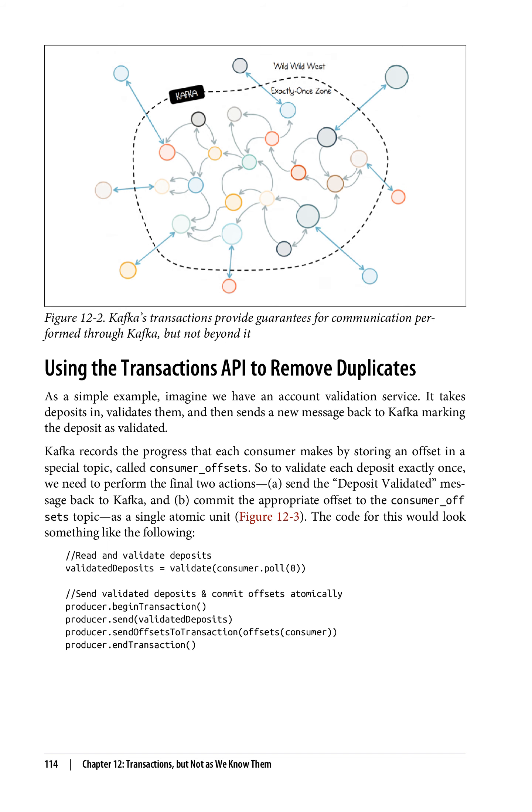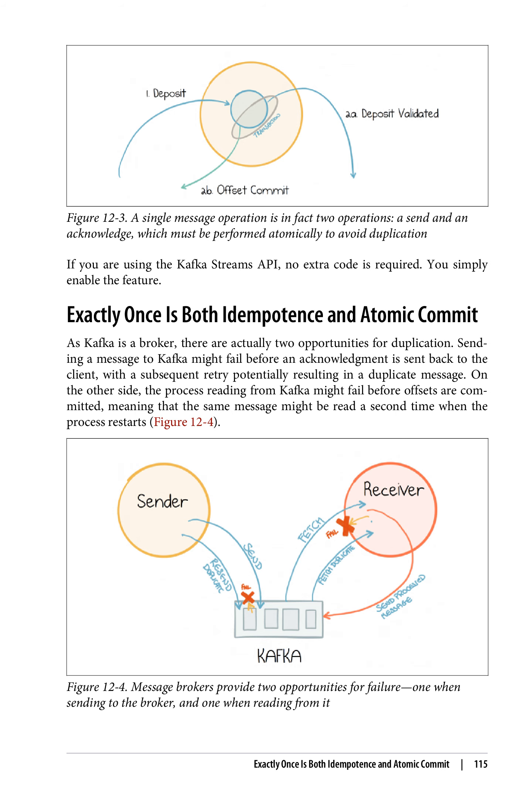Using the transactions API to remove duplicates: as a simple example, imagine we have an account validation service. It takes deposits in, validates them, and then sends a new message back to Kafka marking the deposit as validated. Kafka records the progress that each consumer makes by storing an offset in a special topic called consumer_offsets. So to validate each deposit exactly once, we need to perform the final two actions atomically: (a) send the deposit-validated message back to Kafka, and (b) commit the appropriate offset to the consumer_offsets topic, as a single atomic unit (figure 12-3). If you are using the Kafka Streams API, no extra code is required — you simply enable the feature.